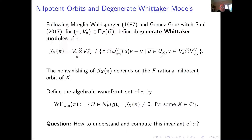If G_{-1} is non-zero, then you have an extra Weil representation. Otherwise you just take the Jacquet module. The variation of this module depends on the F-rational nilpotent orbit. You can define the so-called algebraic wavefront set — these are rational orbits such that the Jacquet module is non-zero. The question is how to understand and compute this invariant of Π.